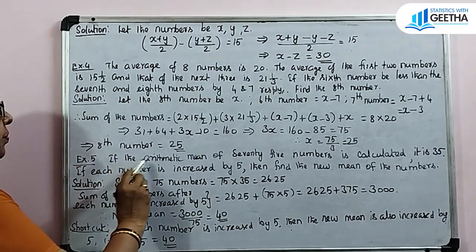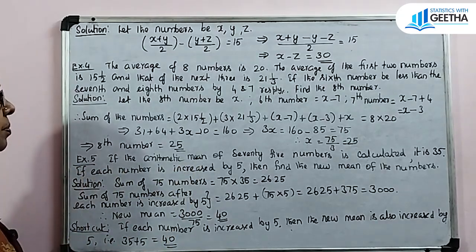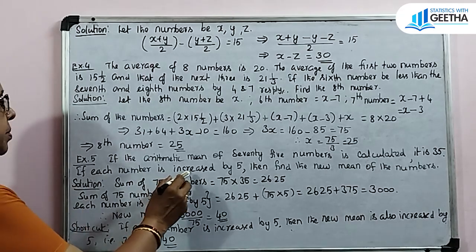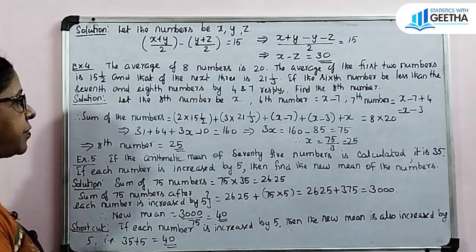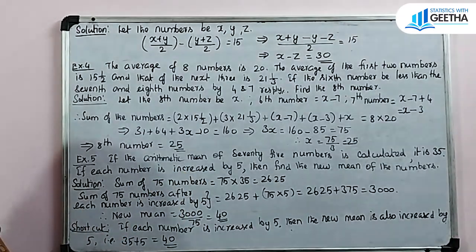Exercise number 5: If the arithmetic mean of 75 numbers calculated is 35, and if each number is increased by 5, then find the new mean of the numbers.